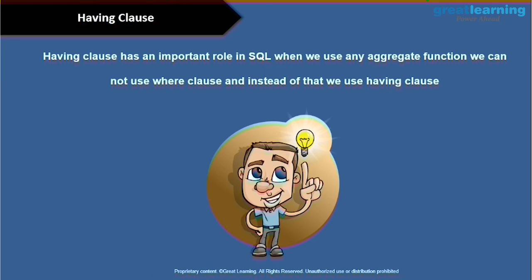The HAVING clause has an important role in SQL. When we use any aggregate function, we cannot use the WHERE clause. There is always a sequence in SQL: SELECT, then FROM, then WHERE, then GROUP BY, and then only you can use HAVING. Whenever you use any aggregate function, instead of WHERE clause, we use the HAVING clause.